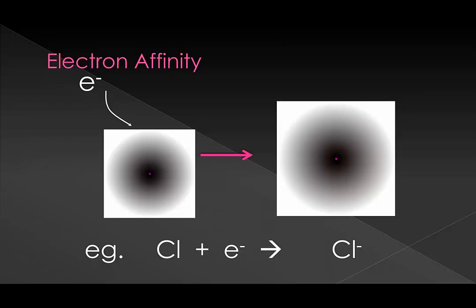Let's consider why an atom would gain an electron more easily than another atom. What is the charge of an electron? It's negative, so a negative electron must be attracted to the nucleus. What trend have we already discussed that describes the amount of charge that valence electrons feel from the nucleus? It's effective nuclear charge. The higher the effective nuclear charge, the more pull a nearby electron feels, and the more likely it is to be attracted to the atom — or the higher the electron affinity.